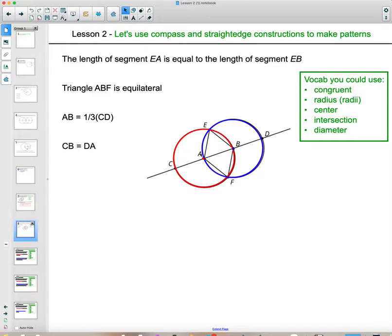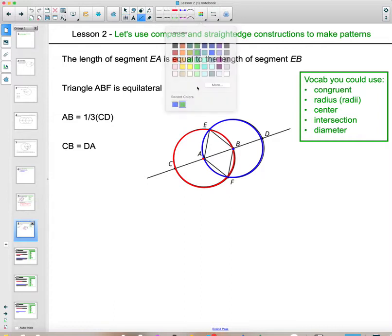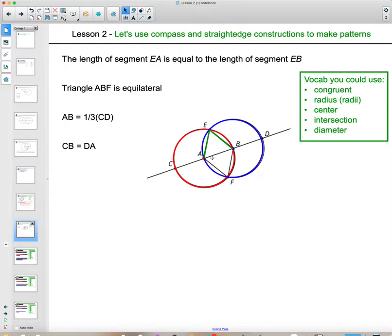How do we know that the length of EA is congruent to the length of EB? Let me just highlight those on here quick. How do we know that EA is congruent to EB is the question.